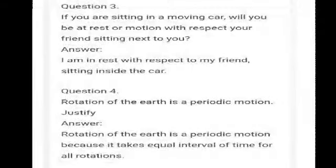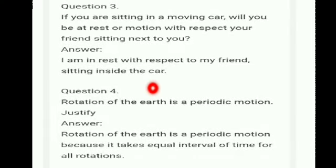Question three: if you are sitting in a moving car, will you be at rest or in motion with respect to your friend sitting next to you? Answer: I am at rest with respect to my friend sitting inside the car. Question four: rotation of the earth is a periodic motion — justify. Answer: rotation of the earth is a periodic motion because it takes equal intervals of time for all rotations.